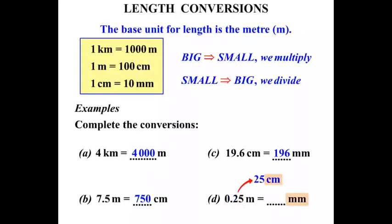Now we're changing from centimeters to millimeters, so we're going to use a factor of 10. To change from centimeters to millimeters, we multiply by 10. And 25 times 10 is 250.